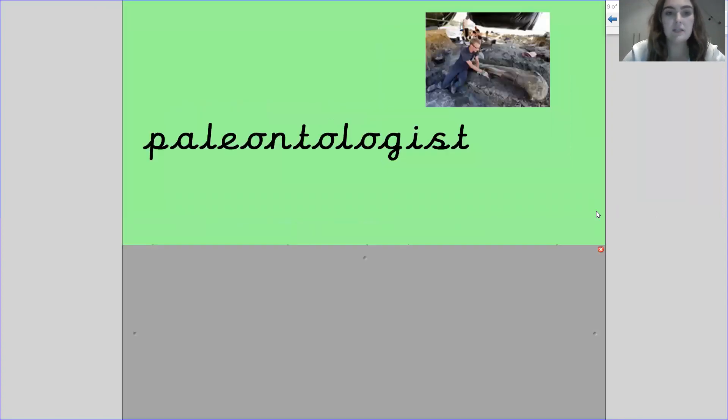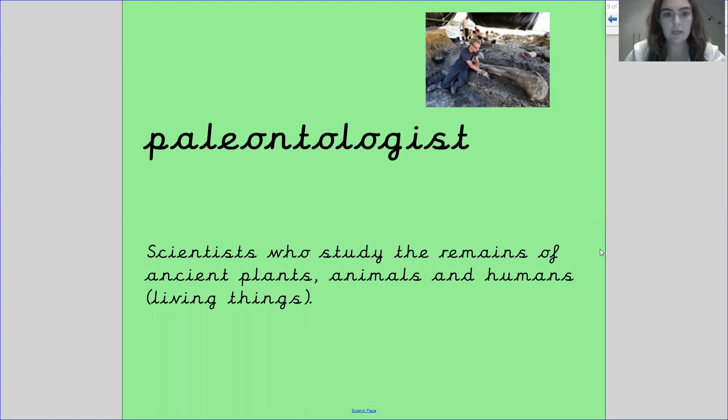The next word is paleontologist. My turn, your turn. Paleontologist. Paleontologist. This is a scientist who studies the remains of ancient plants, animals and humans. They look at living things that used to live in the past.